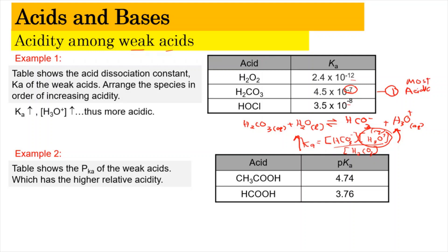This is followed by the value at negative 8, which is number 2, and the third one is number 3. So the most acidic is H2CO3, followed by H2O2 which is hydrogen peroxide. Now we're going to do example number 2.